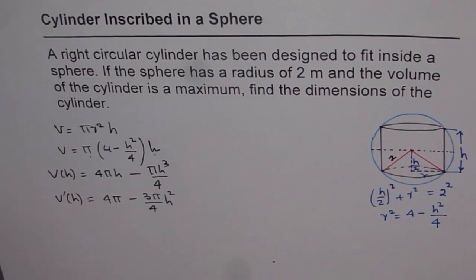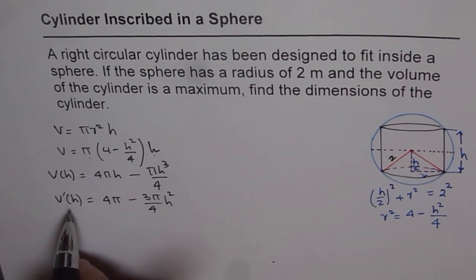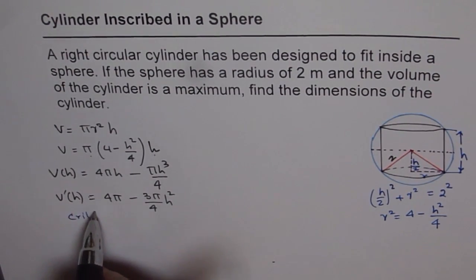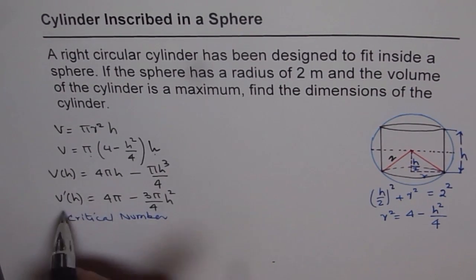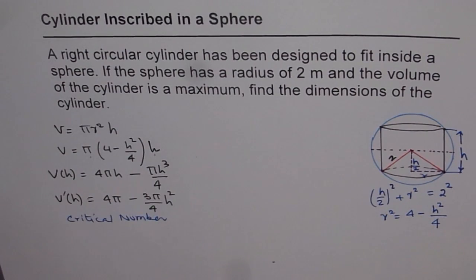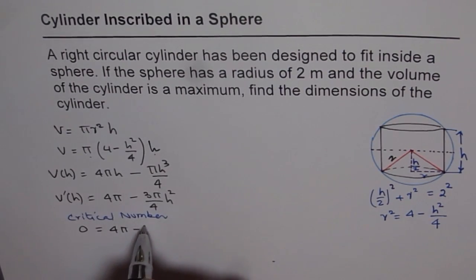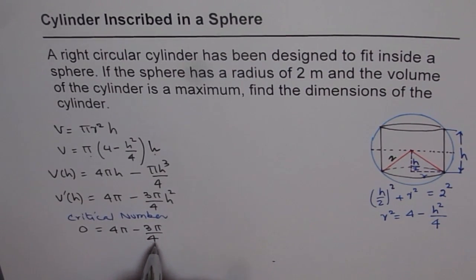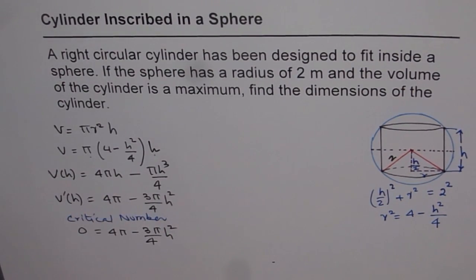To get the maximum volume we need to find the critical number. The critical number is where this derivative is 0. So we equate V'(h) = 0. We get 0 = 4π − (3π/4)h². That is how we can find the critical number.